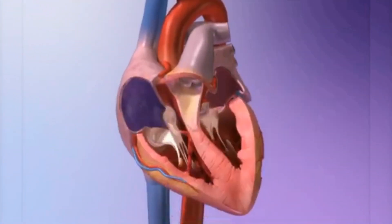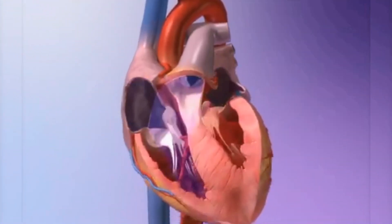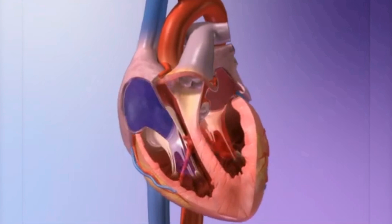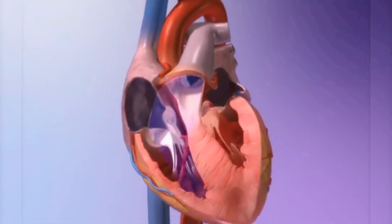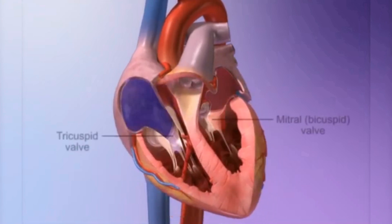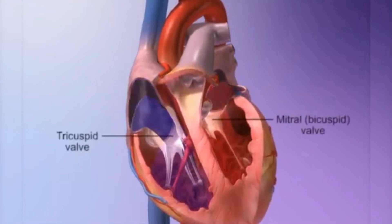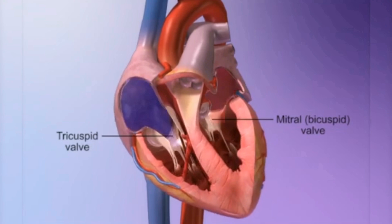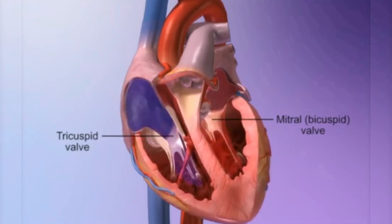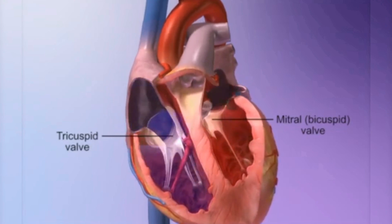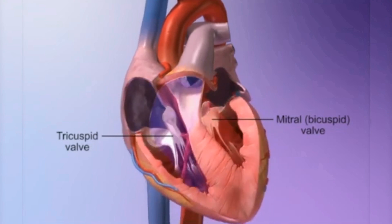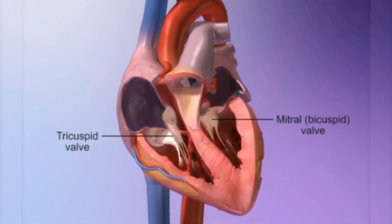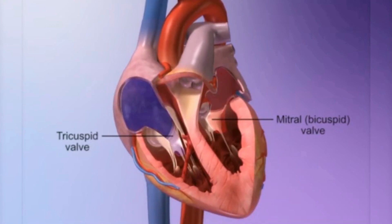Four valves regulate blood flow within the heart. The tricuspid valve separates the right atrium from the right ventricle. The mitral, or bicuspid, valve separates the left atrium from the left ventricle.